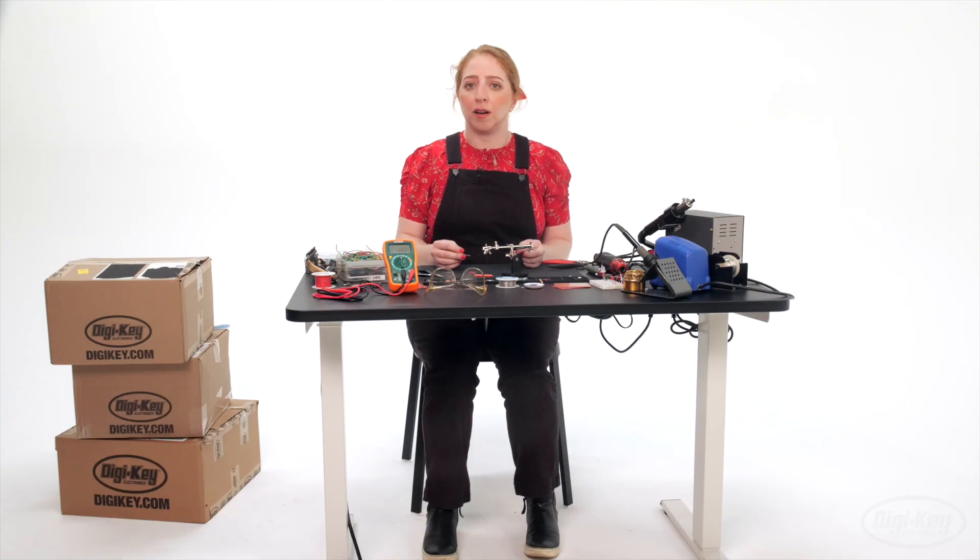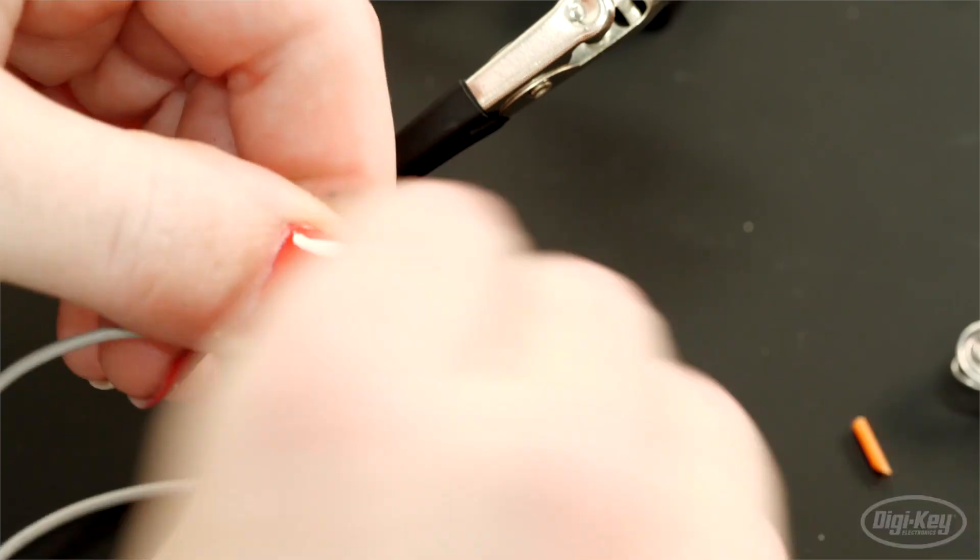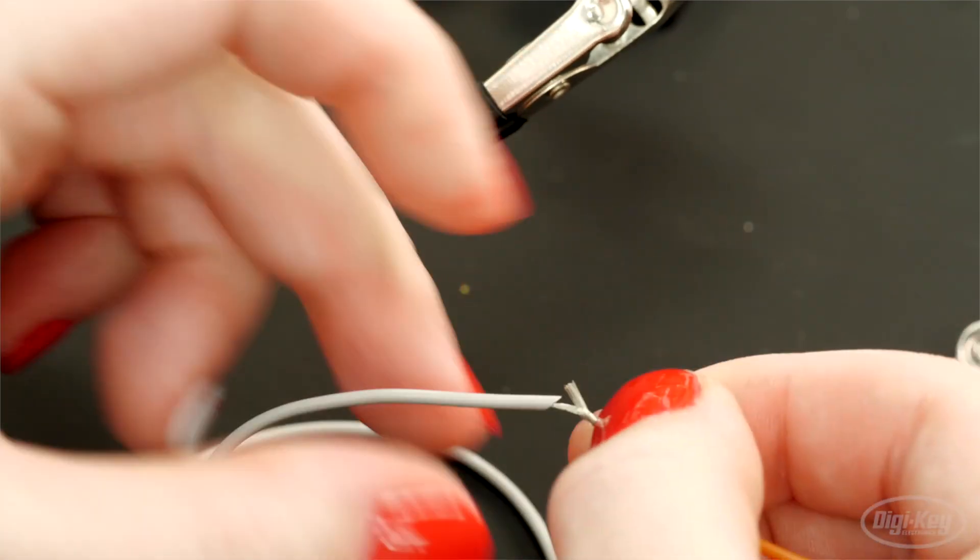If your components might undergo some stress, you can create a mechanically stronger bond by wrapping the wires together first before soldering.